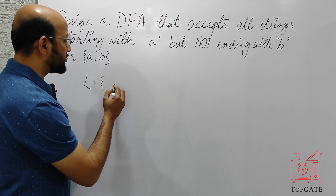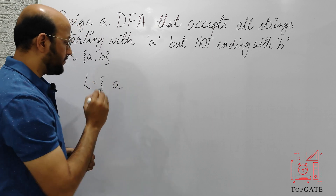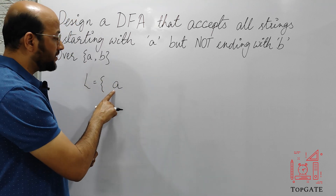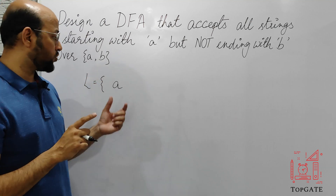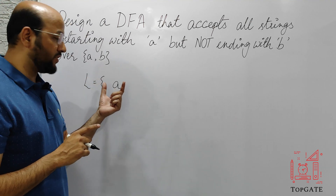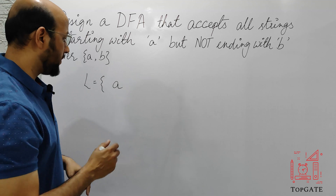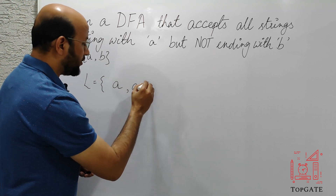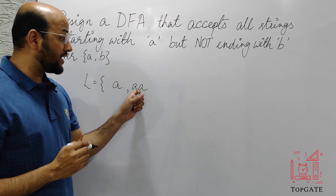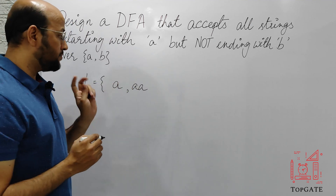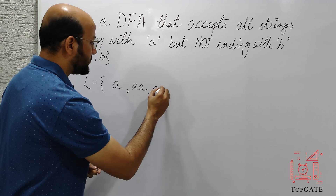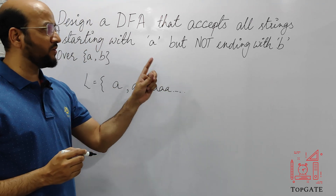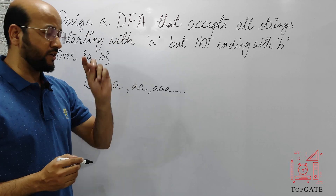The shortest possible string in this case will be A, because A starts with A as well as it is not ending with B. So the shortest possible string that we can have in this DFA is A. Apart from this we can have AA also, because the string starts with A and it is not ending with B. We can also have AAA, AAAA and so on — all these strings must be generated by the DFA.